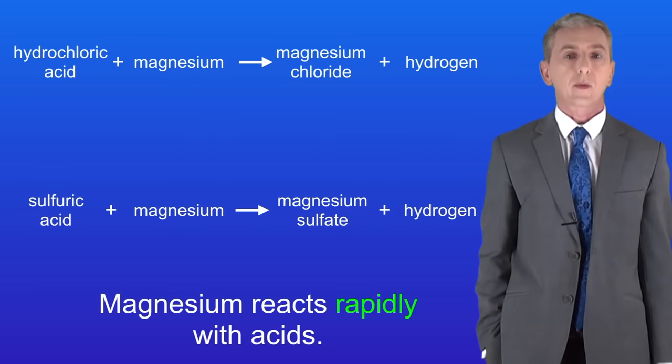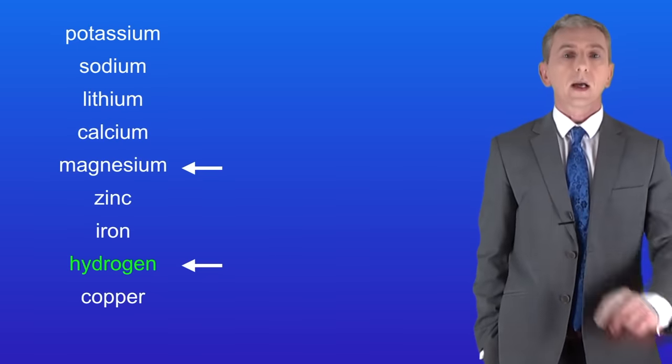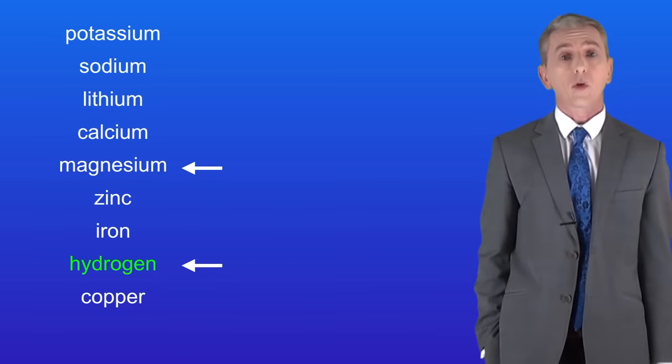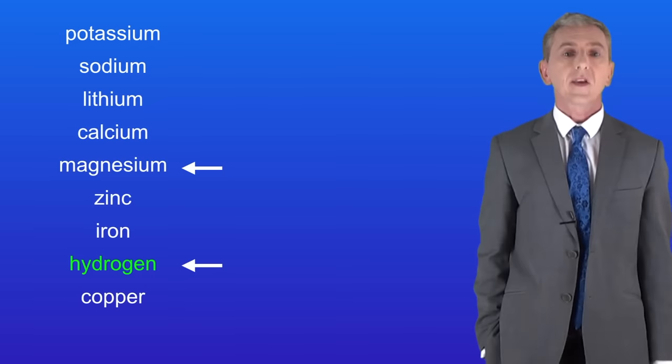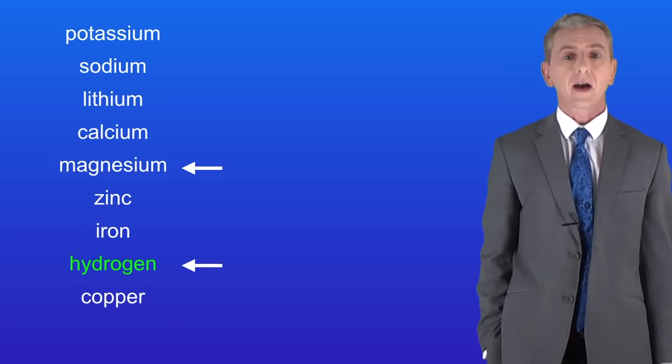Now magnesium reacts rapidly with acids and we can explain that by looking again at the reactivity series. Here it is. As you can see magnesium is quite a lot more reactive than hydrogen. This means that magnesium can easily displace hydrogen from acids.